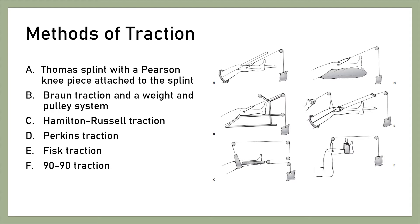The fifth traction is Fist Traction, which consists of a short Thomas Splint and a hinged knee piece. Traction in the axis of the femur was maintained using a proximal tibial transverse pin, but the patient could flex the hip and knee by pulling on a separate cord attached to the end of the thigh splint.